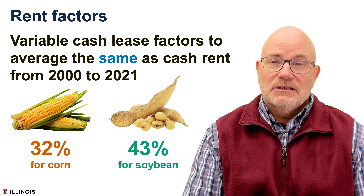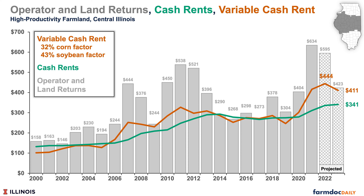If we look at projections for 2023 for a Central Illinois high productivity situation, we see that variable cash rents made a $444 payment in 2022, well below our $595 projection for operator and land return. Operator and land return is what is left to split between the farmer and the landowner. With a $444 rent, the difference — $595 minus $444 — goes to the farmer.